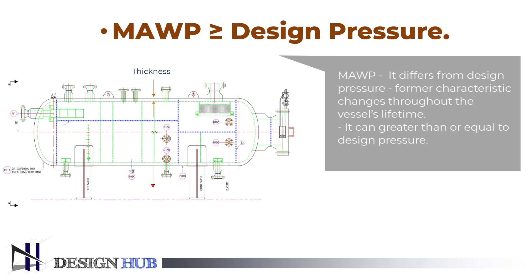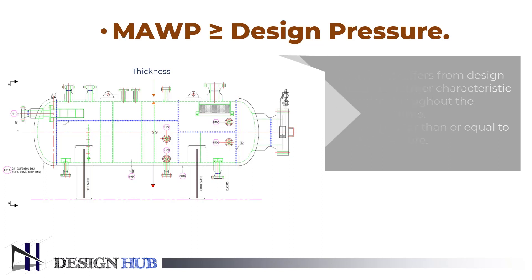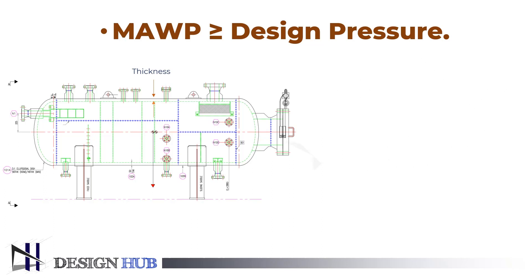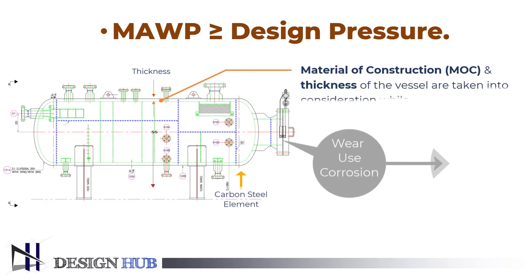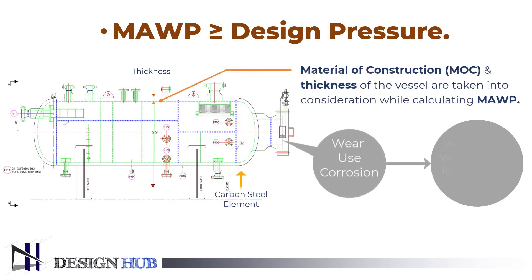It can be greater than or equal to design pressure. The wear, use, and corrosion of carbon steel elements gradually weaken a vessel, lowering the vessel's MAWP.